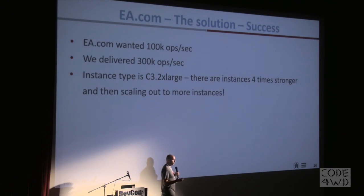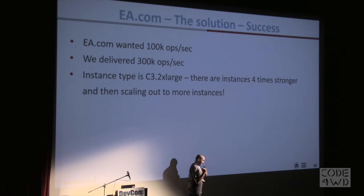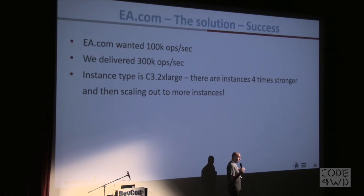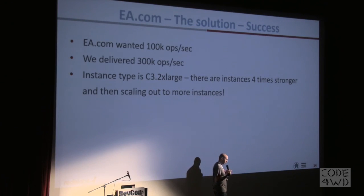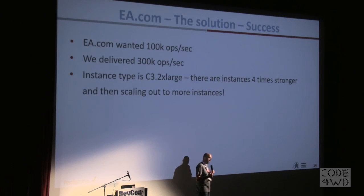EA.com wanted to reach 100k ops per second. After all this tuning, with almost no development on their side, they managed to reach 300k operations per second on the same use case. The whole process took around three days of back-and-forth — mainly emails, not even a single phone call. We hosted them on Amazon on a single c3.4xlarge instance with only eight CPUs. The largest c3 instance has 32 cores, so on a single instance there's still room for four times more performance. And if they need even more, they can scale out, add more instances, and grow the number of games on the same infrastructure with no code changes.